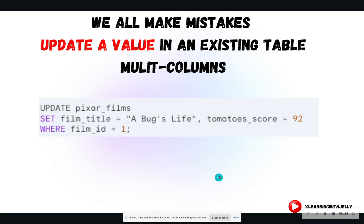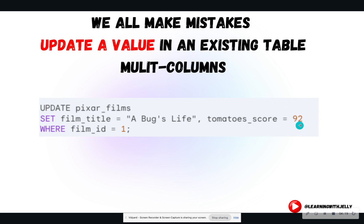We can also update multiple columns at once. We are updating the Pixar Films table, and I want to update the film title to be A Bug's Life. Notice that I put A Bug's Life in double quotes, because this word has an apostrophe — if you use single quotes, it's going to throw an error unless you use an escape character. So if you have an apostrophe in the text, surround it with double quotes. I'm also able to update the tomato score to be 92, where film ID equals one. Since film ID is our primary key, this should only update one row.